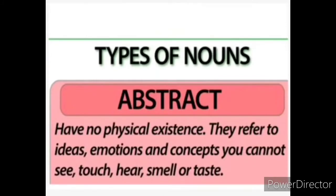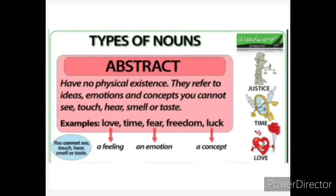Next: abstract noun. Abstract nouns have no physical existence. They refer to ideas, emotions, and concepts. We cannot see, touch, hear, smell, or taste them. Abstract noun means feelings, emotions, and concepts. For example, 'love' — we can express it but we cannot show it physically. 'Fear.' 'Luck.' These all come under abstract noun. Physically there is no existence for abstract nouns, but we can show a feeling, an emotion, or a concept. That is called an abstract noun.